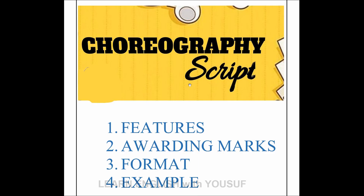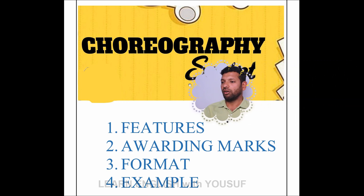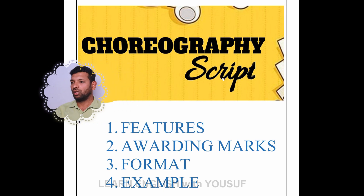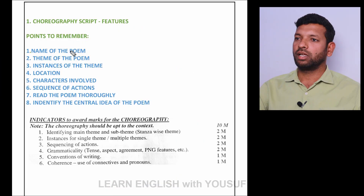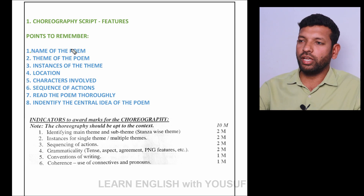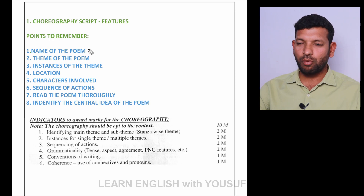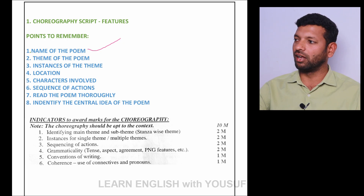So dear friends, you could see on the screen: choreography script features, awarding marks, format, and example. Let's start the topic. Here you could see the points to remember — the features of the choreography script. Point number one: name of the poem. This must be written neatly and clearly.